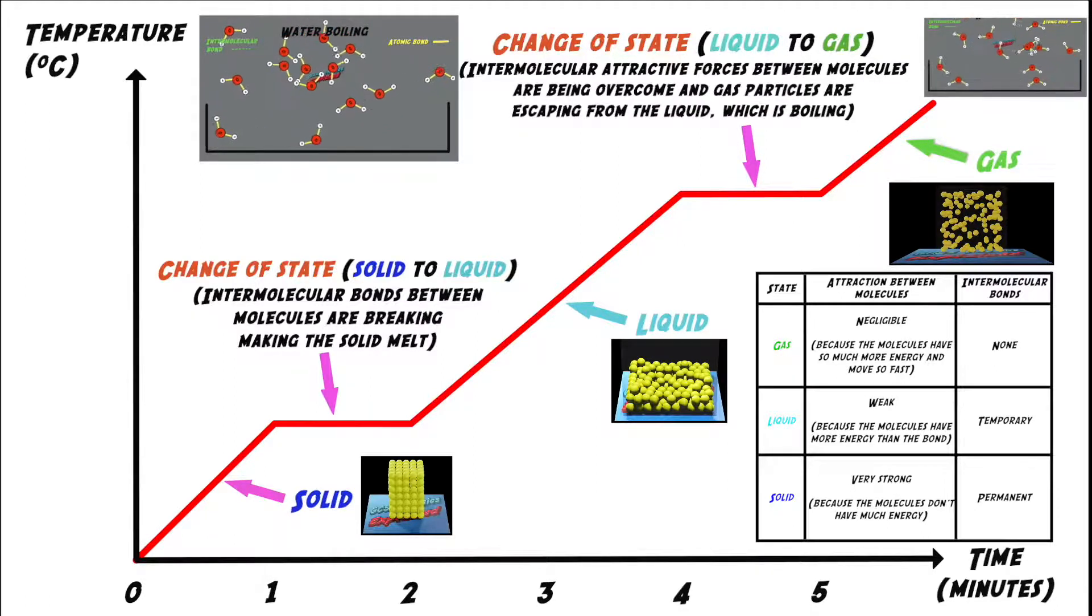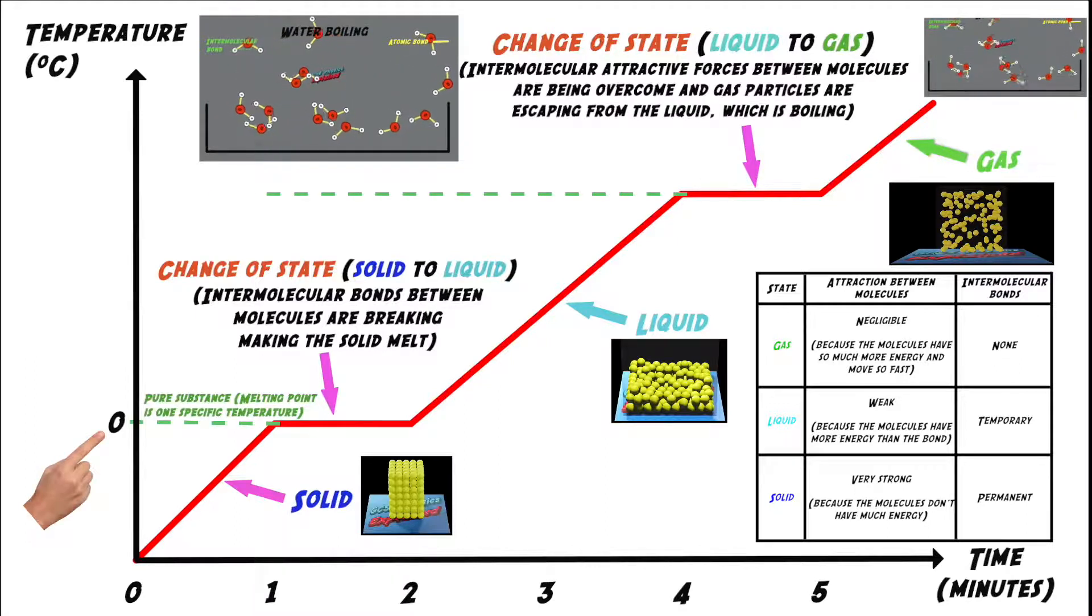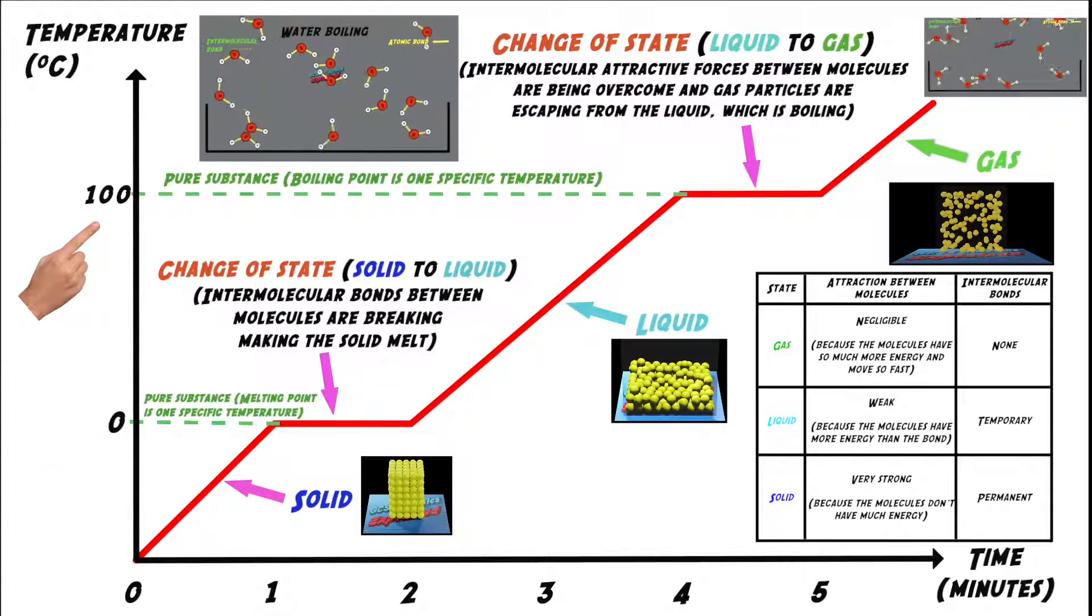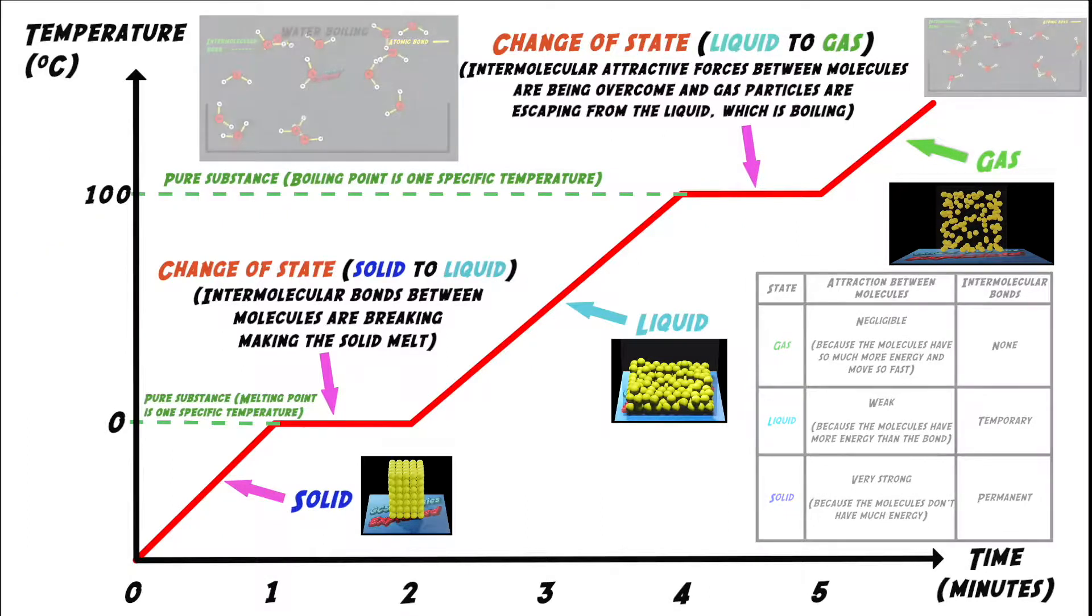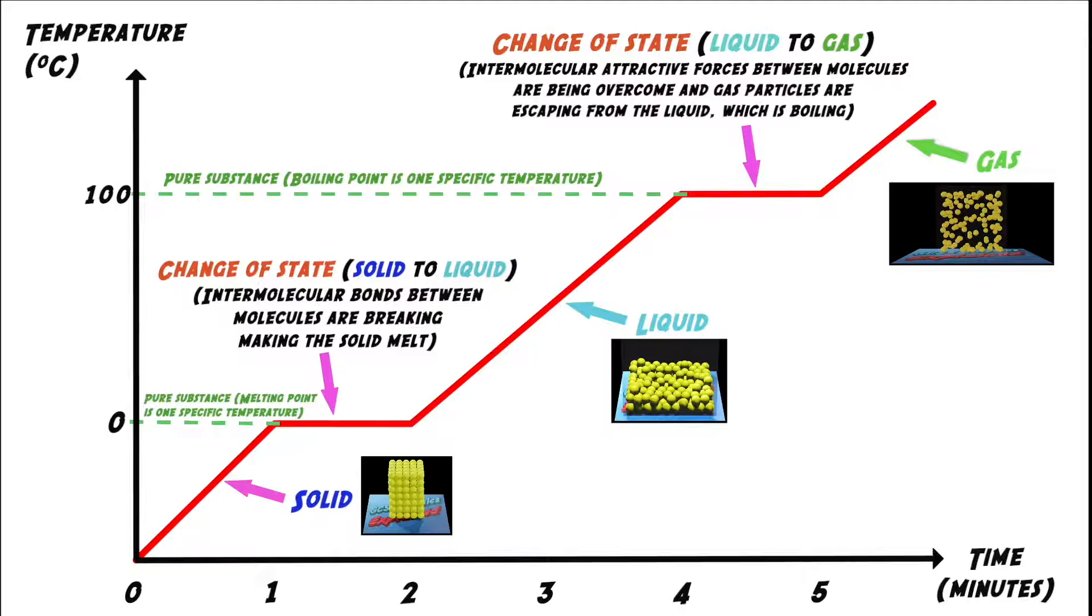The substance I've shown you here is a pure substance. I chose pure water because there's a good chance you'll know that water melts at zero degrees C and boils at 100 degrees C, so I'm hoping that'll help you relate to what I'm saying. What I want you to understand is that because the substance is pure, it has one specific temperature for its melting point and one specific temperature for its boiling point.